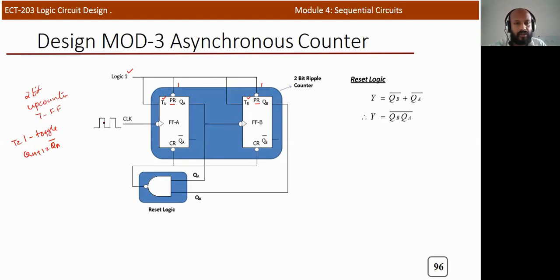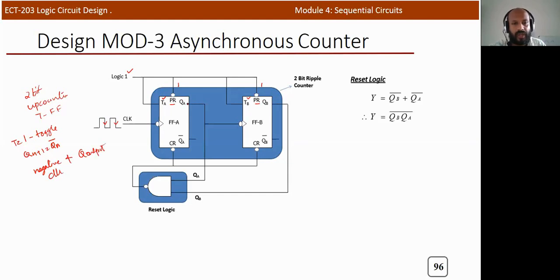TA and TB inputs are connected to logic 1 (toggle mode). The preset pin is also connected to logic 1 to disable it. The clock uses negative-edge triggering, and QA is connected to the next stage. This configuration operates as an up counter, as discussed in lecture 6.